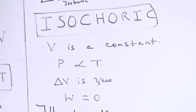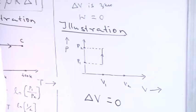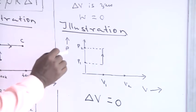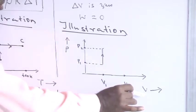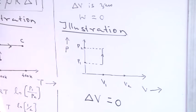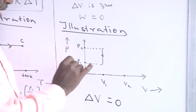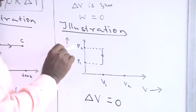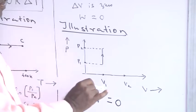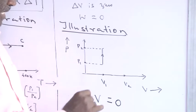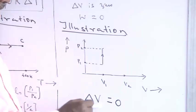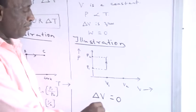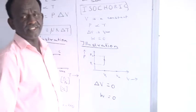Here I have made an illustration for the isochoric process. I have shown the variation of pressure with volume. The system is taken from initial pressure P1 to final pressure P2 at constant volume V1. As a result, there is no change in volume — ΔV equal to zero. Since work done equals P ΔV, the work done is also zero.